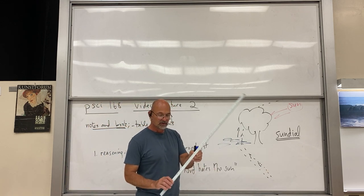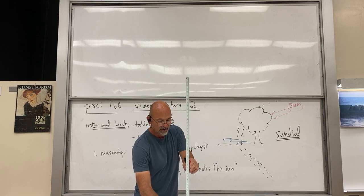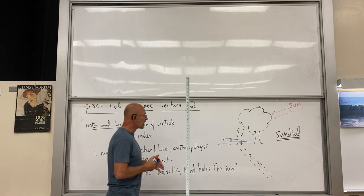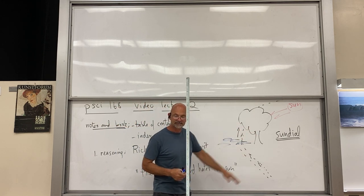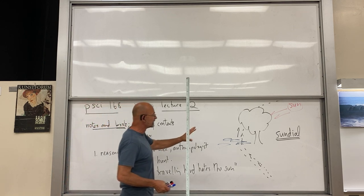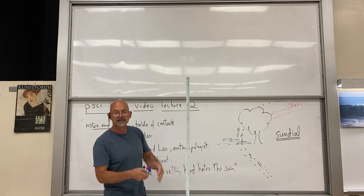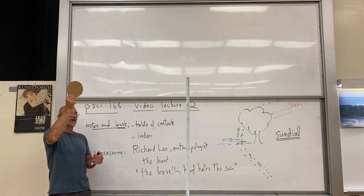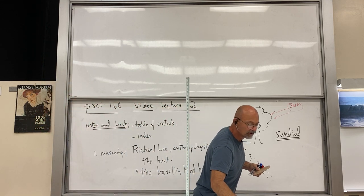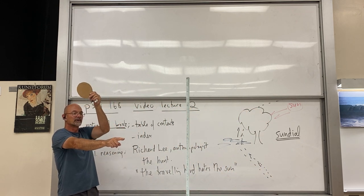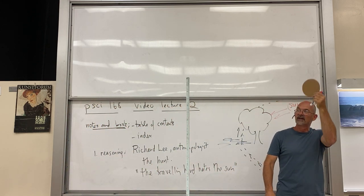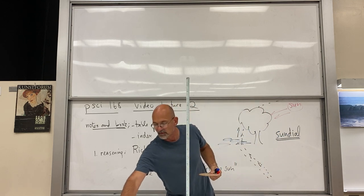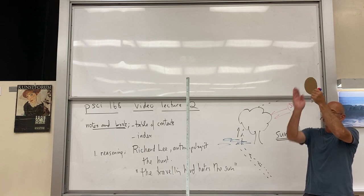Now we take it a step further. If I set a meter stick up, the meter stick casts a more accurate shadow than is cast by a tree. We've progressed from that basic sundial to a more accurately constructed sundial. If the sun is up here, the shadow is cast in the corresponding direction. Later in the evening, the sun is up there and the shadow is correspondingly over there.